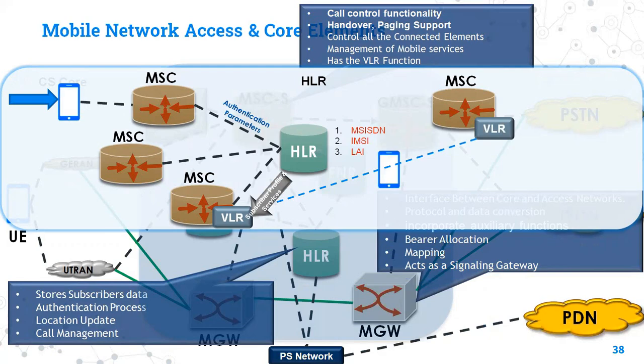Let's go to another node, which is the HLR. The HLR is short for Home Location Registry, which is the database of all subscribers — any subscriber on the network is available on the HLR.